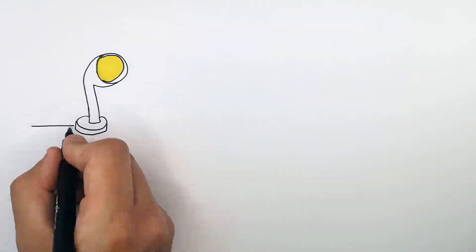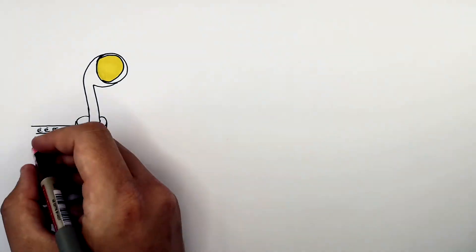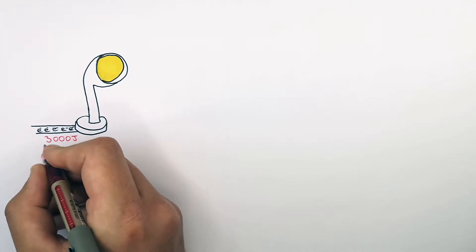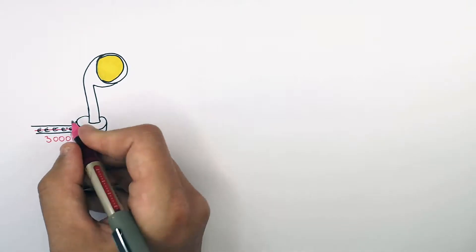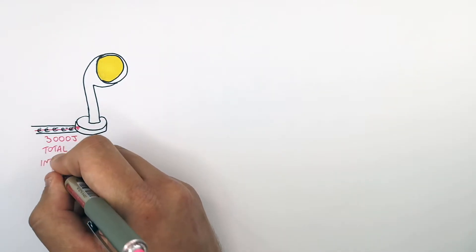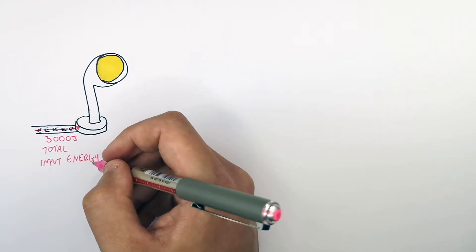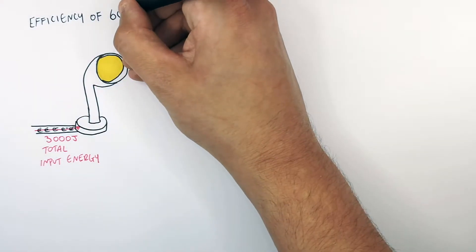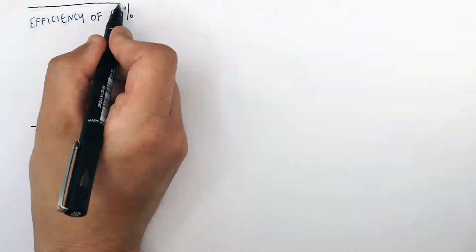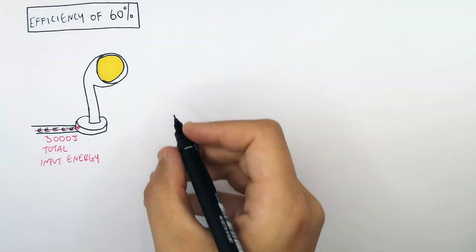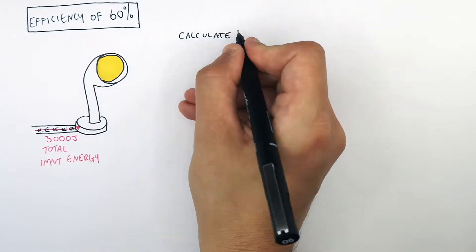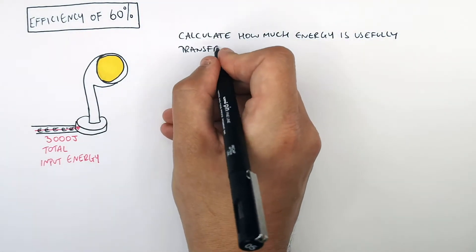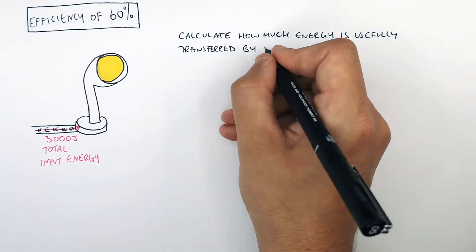The total input energy for this lamp is 3,000 joules. This lamp is 60% efficient. The question is: calculate how much energy is usefully transferred by the lamp.